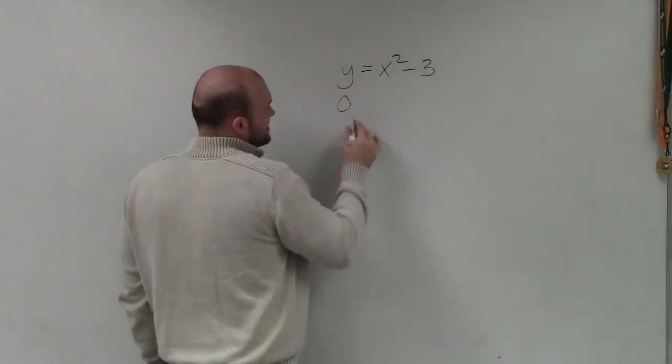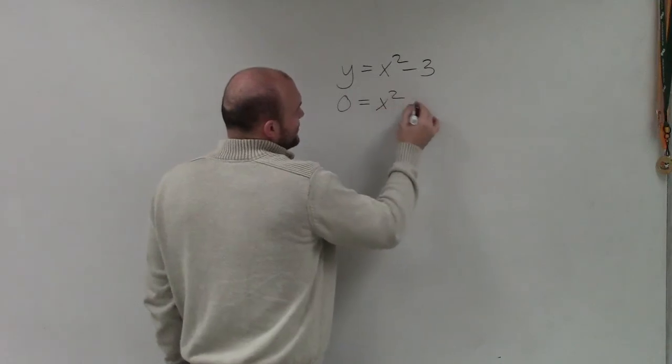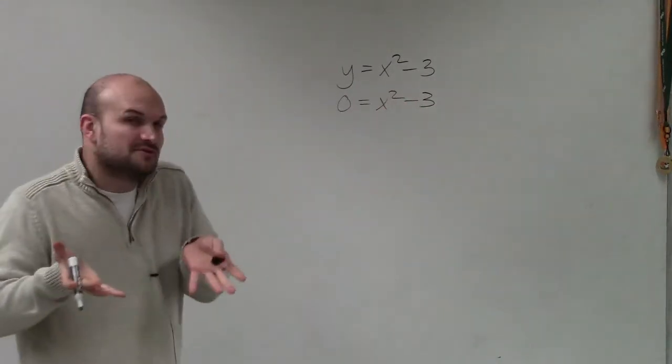So again, to solve this, we're going to set this equal to 0. And therefore, we'll have x squared minus 3. Now, again, we need to be able to factor this.